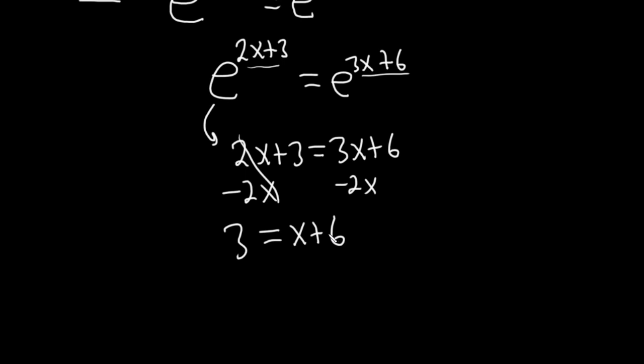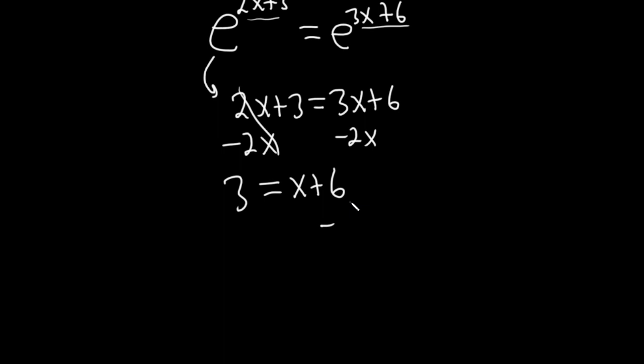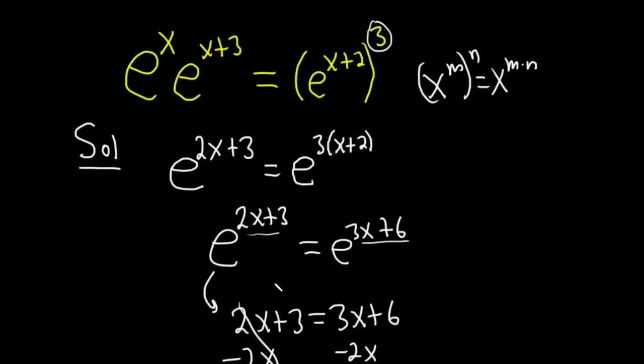But in any case, subtract 2x, so we're here, and then subtract 6. Let's finish it up. So we get x equals negative 3. And that's it. That would be the answer there. So yeah, I hope this video has been helpful. Good luck.